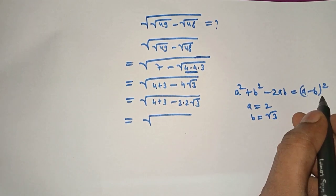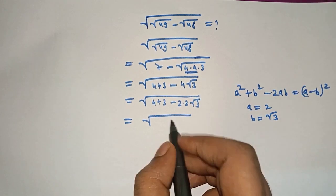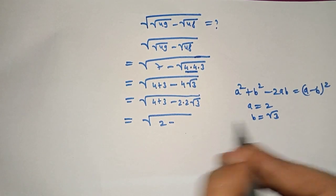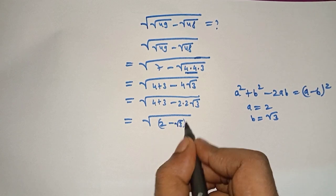a minus b the whole square. Now a is 2 minus b is under root 3 the whole square.